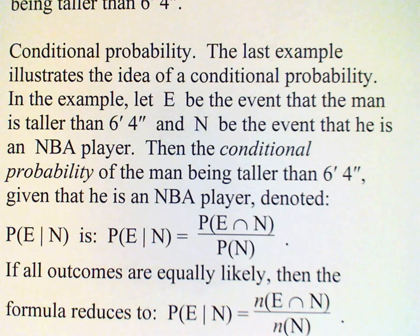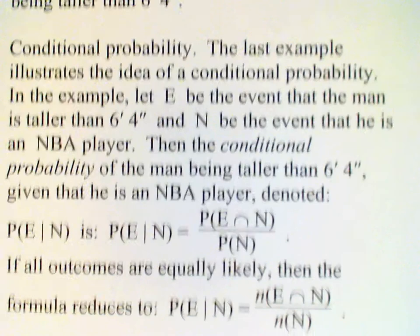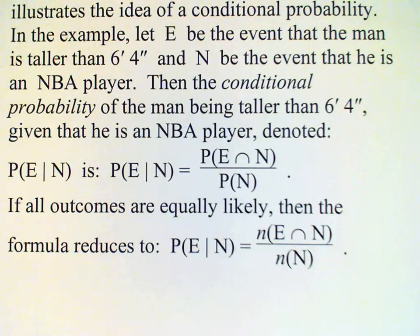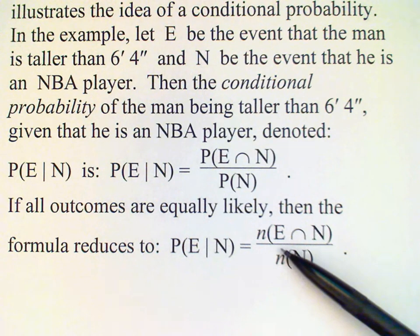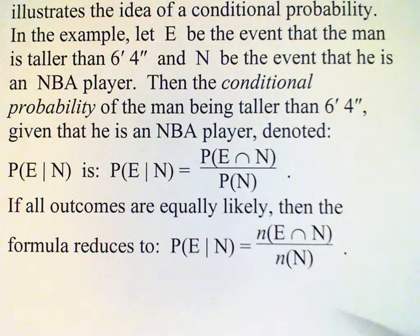In many of the examples that we look at, the outcomes will be equally likely, and in that situation the problem is simplified. All we need to do is count the number of outcomes in the intersection and divide by the number of outcomes in the conditioning event.